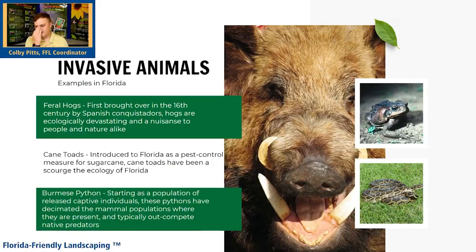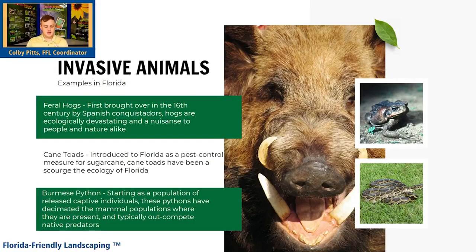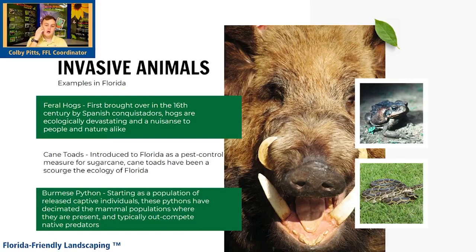Moving on to invasive animals — when it comes to your yard, animals are most of the time going to take professionals. We have a feral hog looking at us here. I'm sure locals are familiar with hogs — they are a scourge on the environment. They were first brought over in the 16th century by conquistadors who had pigs as a food source. When they moved on, they left the pigs, and it turns out the continental U.S. is a great place for pigs to live. They'll root up and destroy land, and really throw the entire ecological balance of an area off.